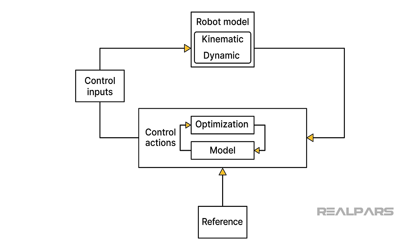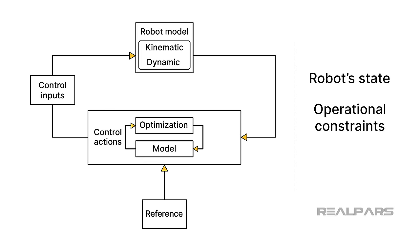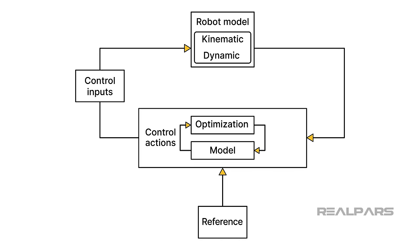The optimization block represents the algorithm within the MPC controller. Without going into a deep mathematical discussion, the optimization block plays a critical role in determining the best control actions to achieve desired system behavior, while considering the robot's state, operational constraints, and sequence objectives. Finally, the Control Inputs block represents the actual control inputs that are applied to the robot as determined by the optimization algorithm.